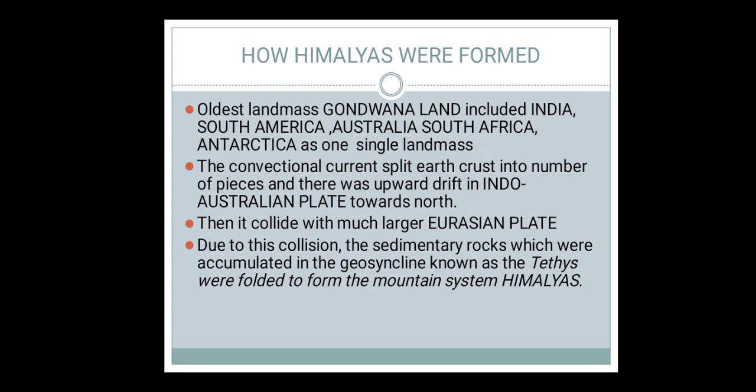In the north we have the great Himalayan mountains. The question arises: how were these Himalayan mountains formed? These are young fold mountains and very important for our country. They form a natural boundary in the north and east of India, save us from very cold winds coming from Siberia, and are the source of all major rivers.